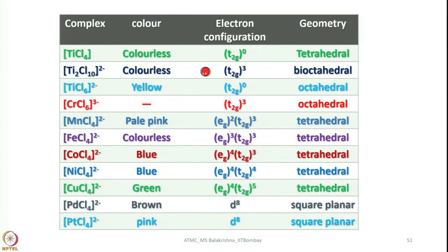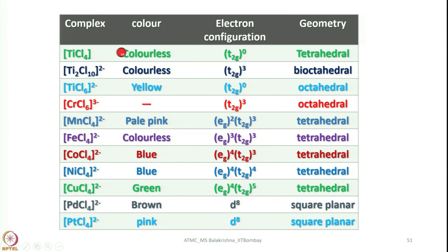I have shown some homoleptic halide complexes here. Looking at titanium tetrachloride — it is colorless. Once we say colorless, you should correlate that with spectroscopic properties: d-d transition is not possible because it is d0, so it is colorless. With four ligands, it is tetrahedral.